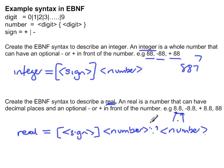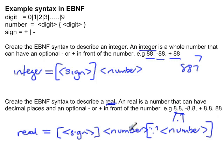The second decimal and number are optional, so we put square brackets around them to show that either you have that part or you don't. So a real is: an optional sign, followed by a number, followed by an optional decimal point and another number.